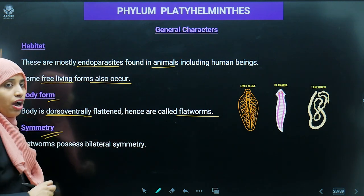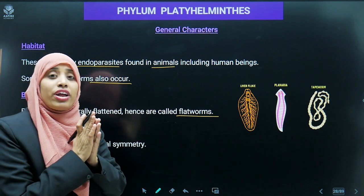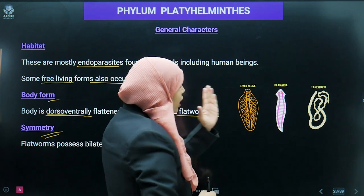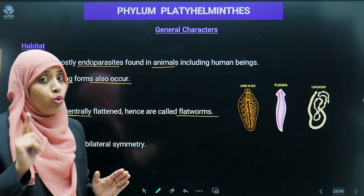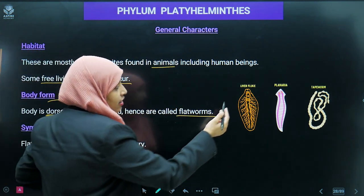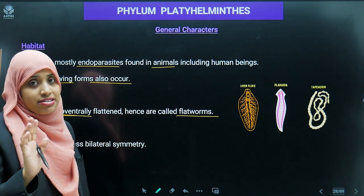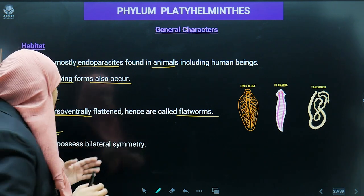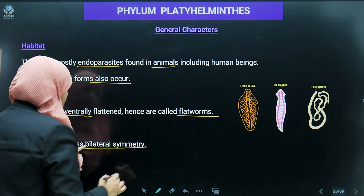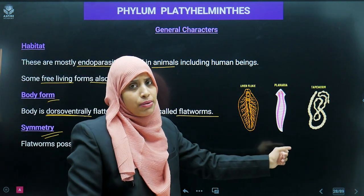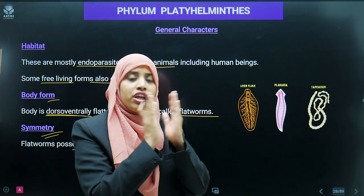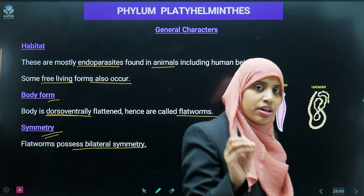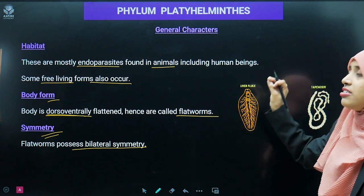Their symmetry: if we look at the liver fluke, we can cut it through one plane only, which means it is showing bilateral symmetry. Bilateral means we can divide it into two equal halves. The same applies to planaria and tapeworm — bilateral symmetry is seen in all platyhelminthes.